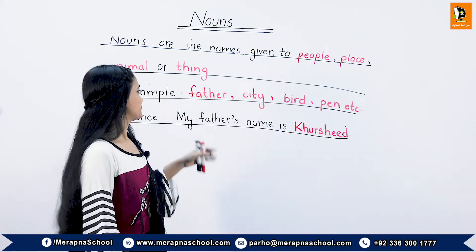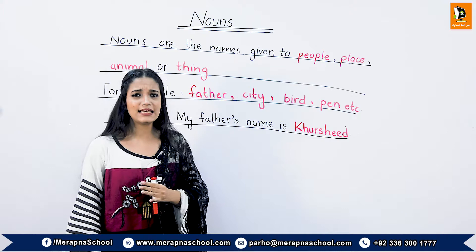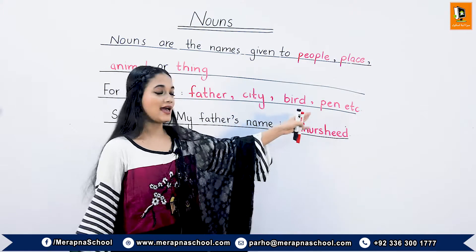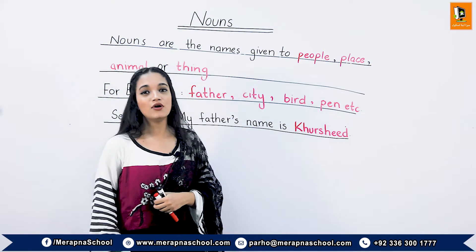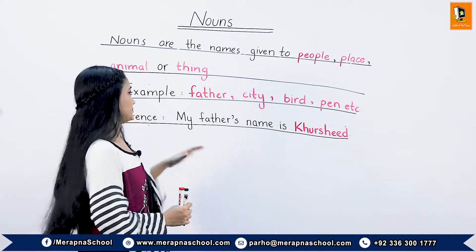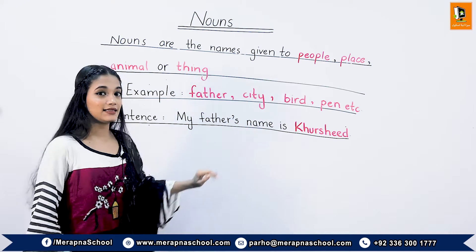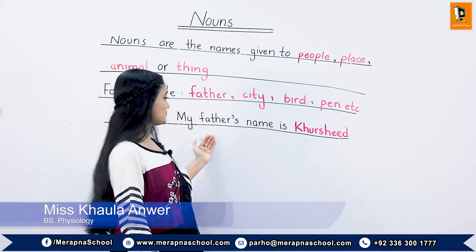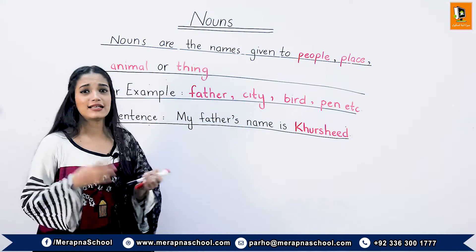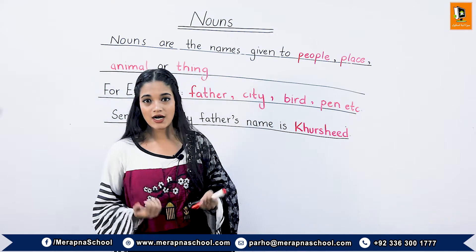So nouns are names given to a person, place, animal, or thing. For example, 'father' is a name given to a person; 'city' is a name given to a place; 'bird' is a name given to an animal; 'pen' is a name given to a thing. When we use a noun in a sentence, for example: 'My father's name is Hrshid.' Here, 'father' is a noun, and the particular name 'Hrshid' is also a noun.